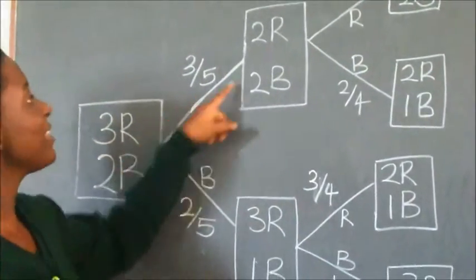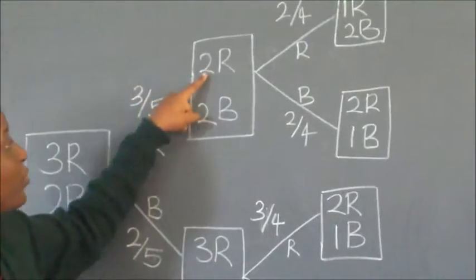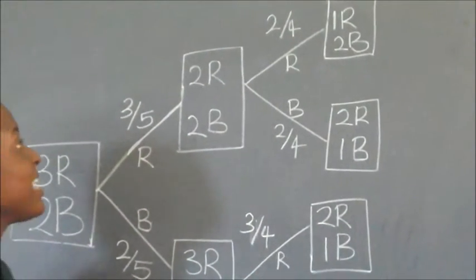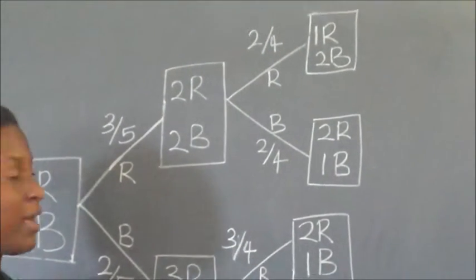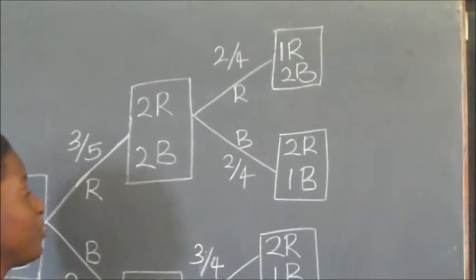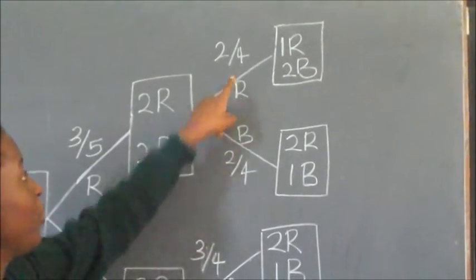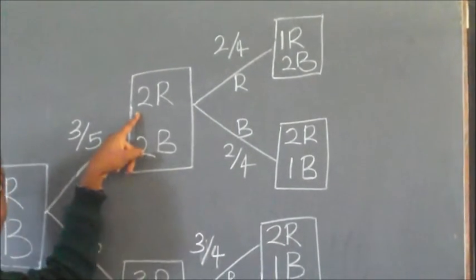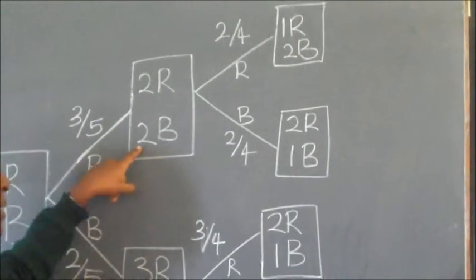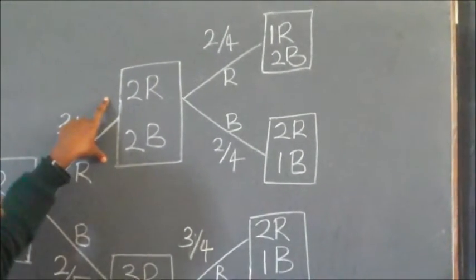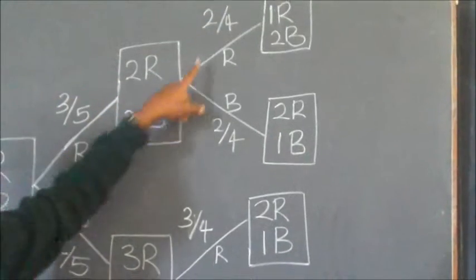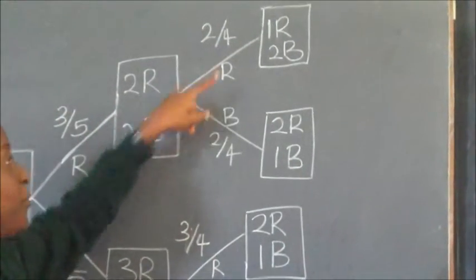When we pick a red sleeper, two red and two blue remain. If we then pick another red sleeper from this, the probability will be two out of four, because there are two red sleepers and two blue sleepers, making four in total. So it's number of red out of total — that is two out of four.